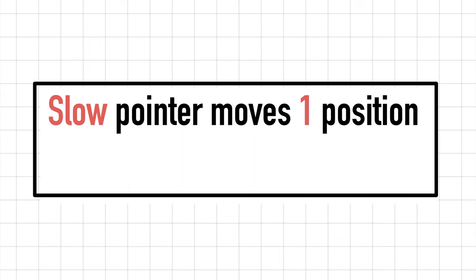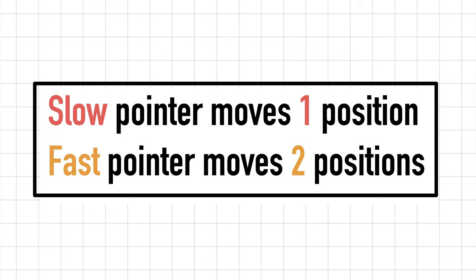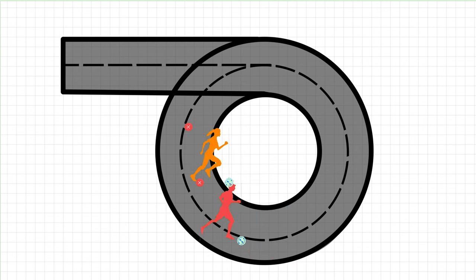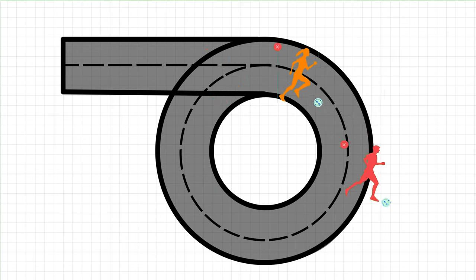In Floyd's algorithm we have two parts. In part 1 we have two pointers: one is slow, it moves one position with each iteration; the other is fast, it moves two positions with each iteration. We move the pointers until they meet. The reason they have to meet is actually pretty intuitive when you think of the pointers as runners on a circular track. If one of the runners moves twice as fast as the other, then the fast runner will inevitably overlap and pass the slow runner, so at some point they must meet.